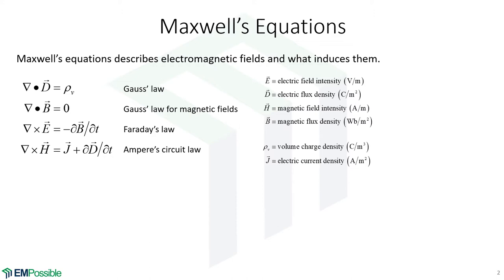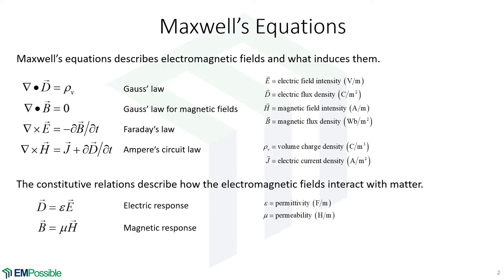This all has to start with Maxwell's equations — the equations that describe all of classical electrodynamics. We can think of Maxwell's equations as describing what causes fields and how they behave. Interestingly, Maxwell's equations don't tell us how the fields interact with matter; there are no material properties like permittivity and permeability. That information comes from the constitutive relations, which is where the electric permittivity and the magnetic permeability enter in.